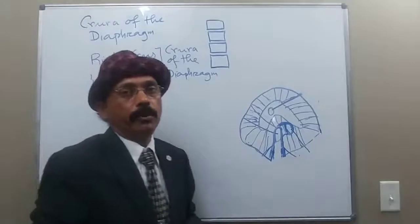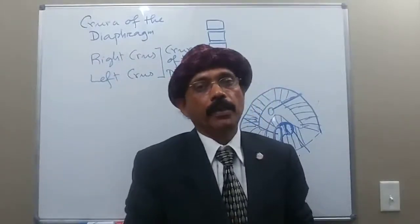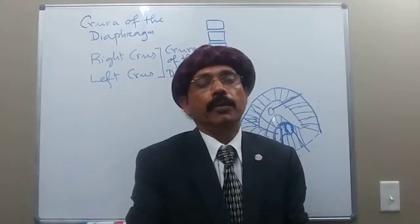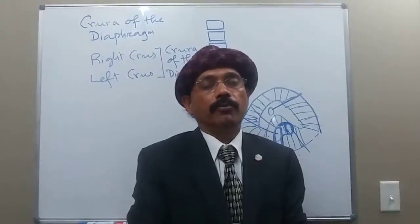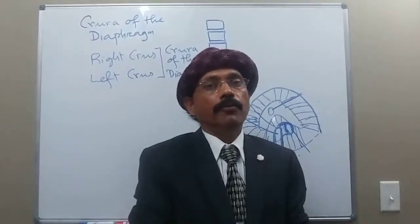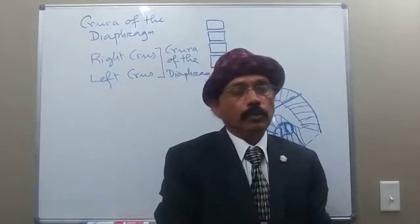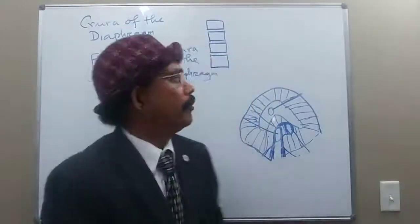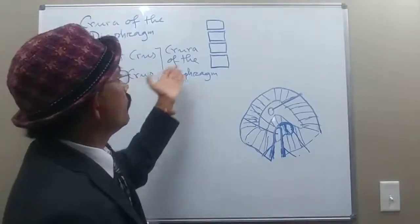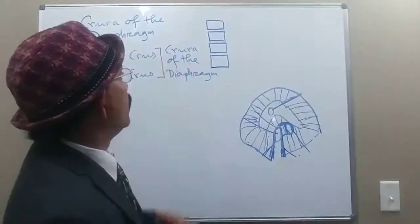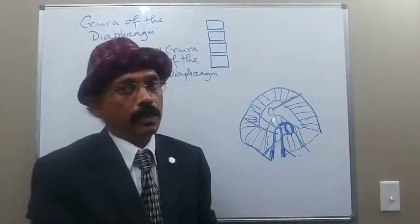The crura are one of the origins of the diaphragm. The diaphragm takes origin from the lower ribs, from the xiphoid process of the sternum, and also from the lumbar vertebrae. Through the lumbar vertebrae we get the connection of the crura of the diaphragm, which contribute to the origin of the muscles of the diaphragm.